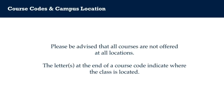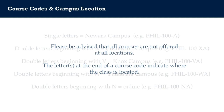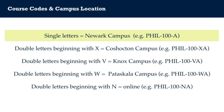Please be advised that all courses are not offered at all campus locations. The letters at the end of a course code indicate where the class is offered. For example, single letters A, B, C, etc. indicate that the class is offered on the Newark campus — for example, Philosophy 100A is offered at the Newark campus.